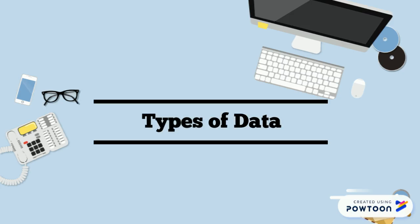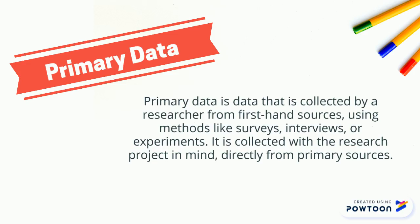Types of data. Primary data is data that is collected by a researcher from first-hand sources, using methods like surveys, interviews, or experiments. It is collected with a research project in mind, directly from primary sources.